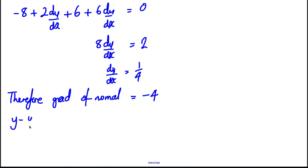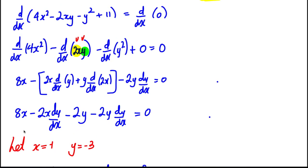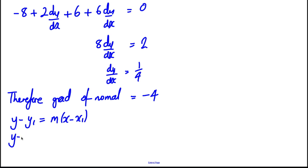And we're going to use y - y₁ = m(x - x₁), and we're going to say to ourselves that y - (-3) is going to be -4(x - (-1)).